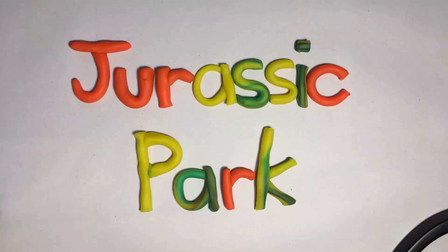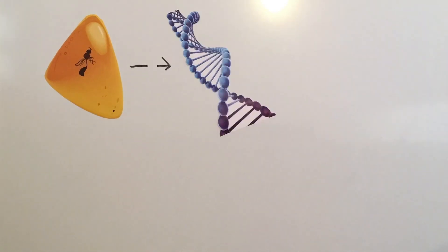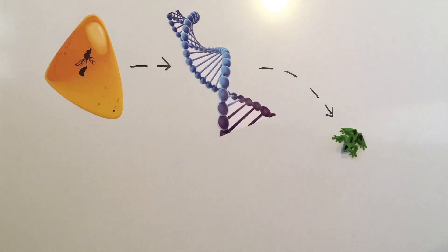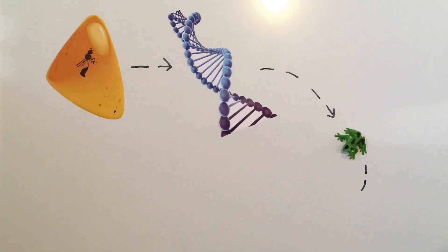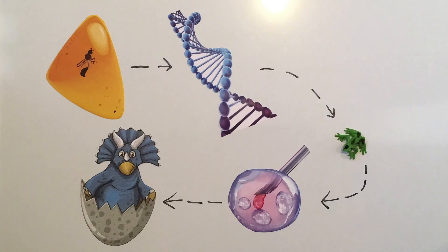In the movie Jurassic Park, they took a fossilised mosquito which had fed on the blood of a dinosaur, sucked out some DNA and cloned it in the laboratory, repaired gaps in the DNA strand with amphibian DNA, injected it into a living cell like an ostrich egg, and out popped a baby dinosaur.